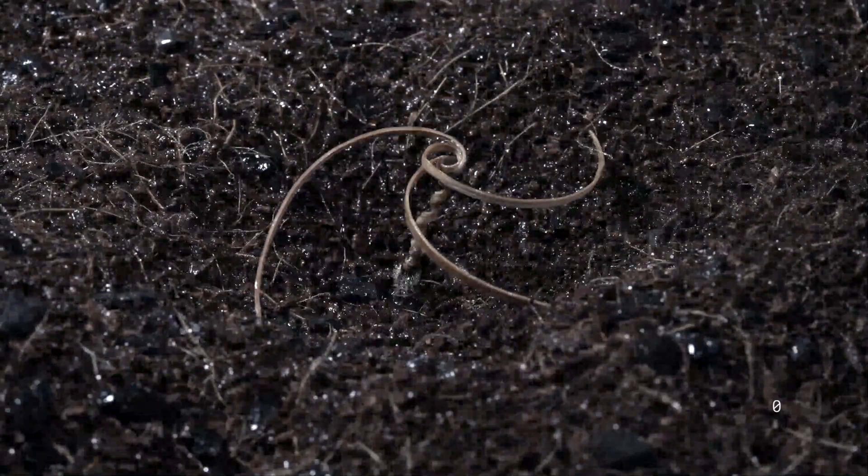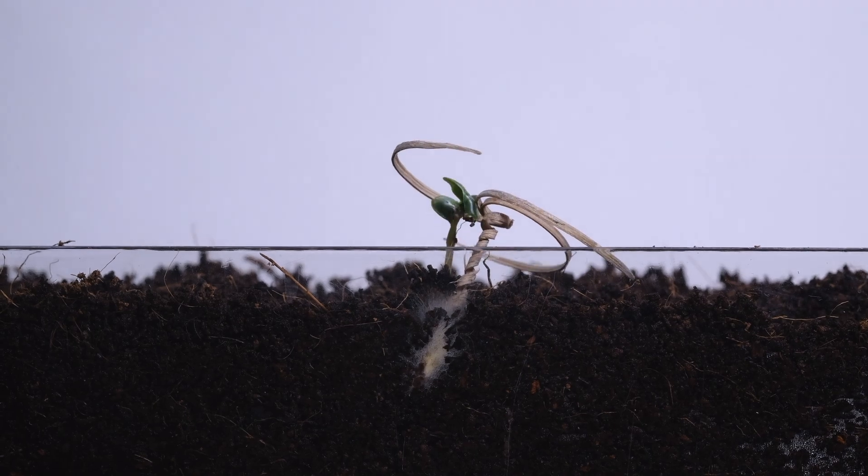When the rain comes, the coil will loosen up and create a spinning motion and push the seeds into the ground.